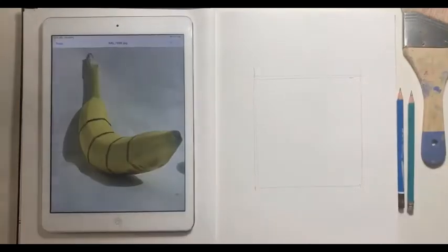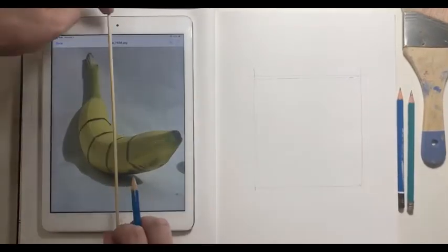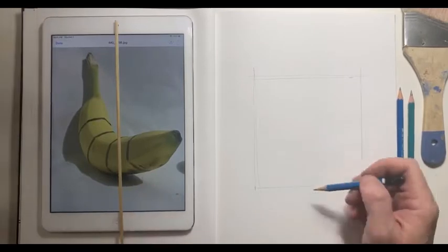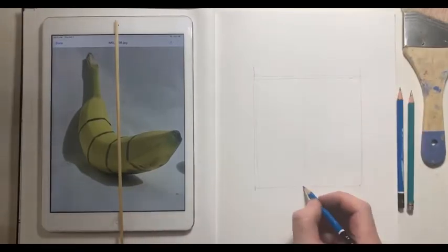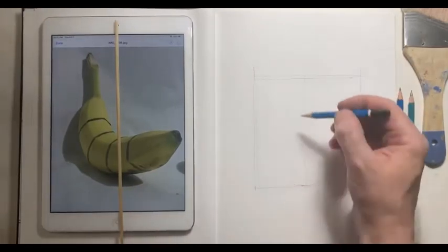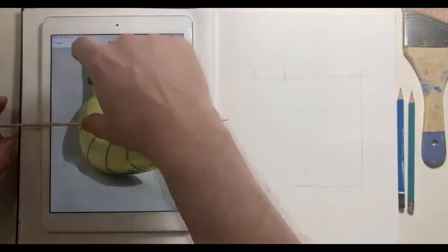I notice the relationship of height to width is about one to one, so it effectively will fit inside of a square. That's the result of the foreshortening of this object since it's aiming straight at you.